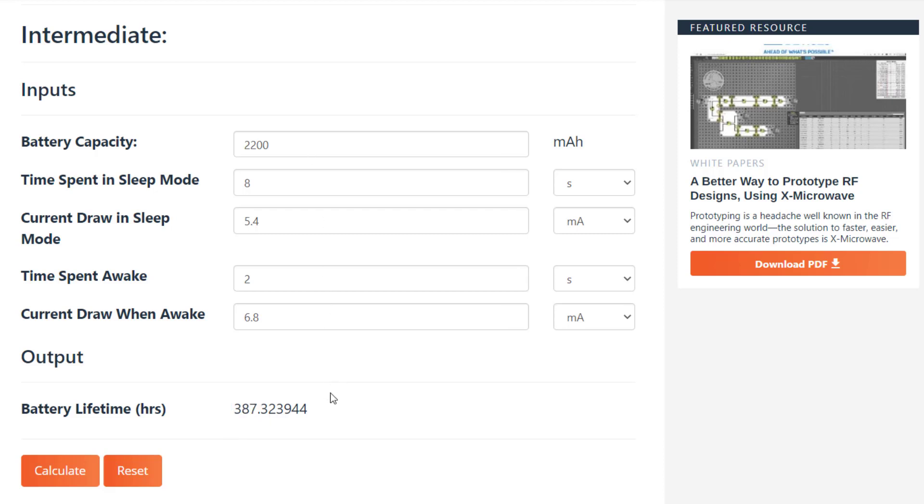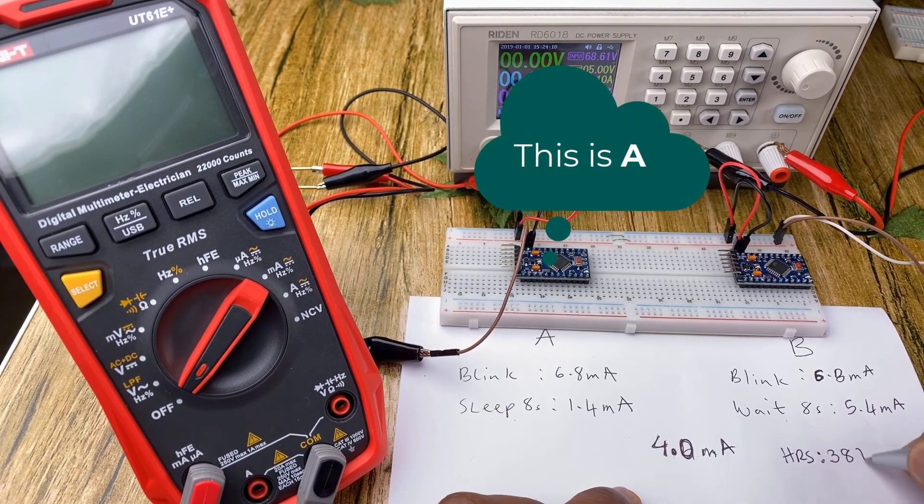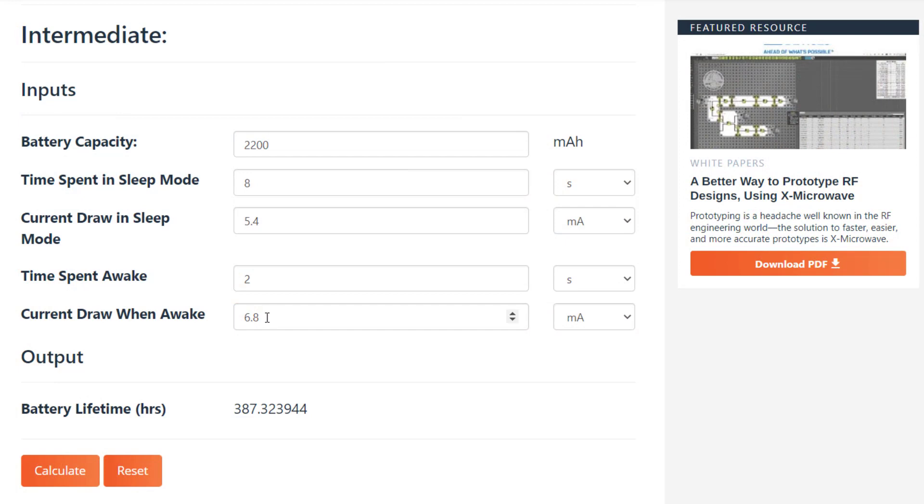Now let's take a look at setup A. Given that setup A also draws the same amount of current while awake, all we need to change here is the sleep current. So we will change this to 1.4. And then upon clicking calculate again, we can see setup A is going to last for 887 hours. So this is more than 2 times the duration of setup B.